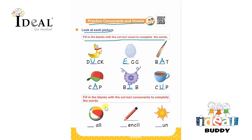The child has to fill in the blanks with the correct consonants to complete the words. The first one is a ball — writing B. Read out the whole spelling: B, A, double L — ball. After that it is pencil: P, E, N, C, I, L. After that there is a picture of a sun: S, U, N — son.